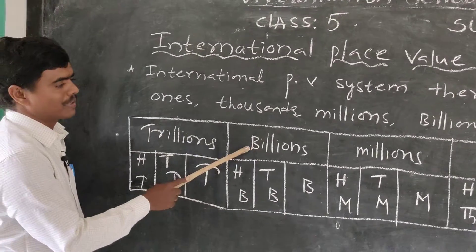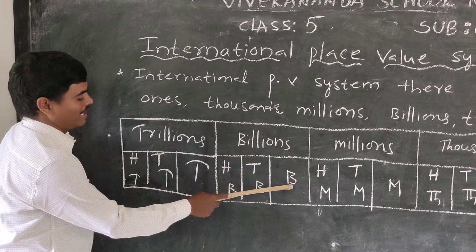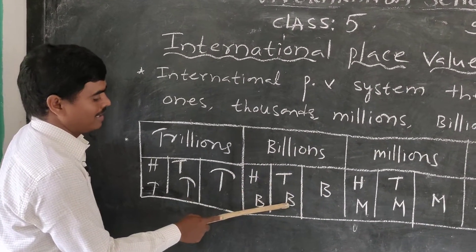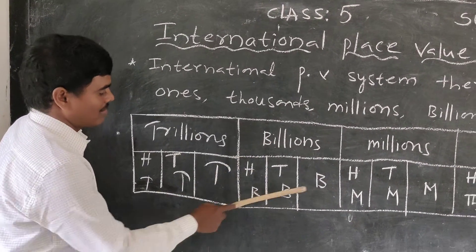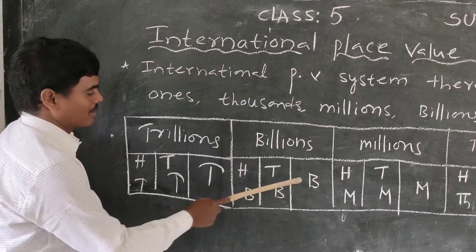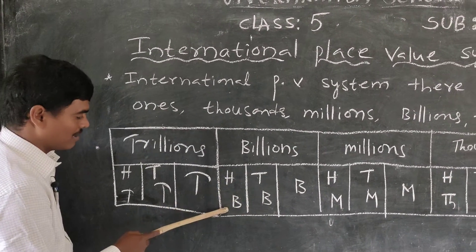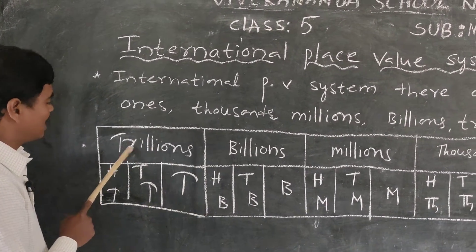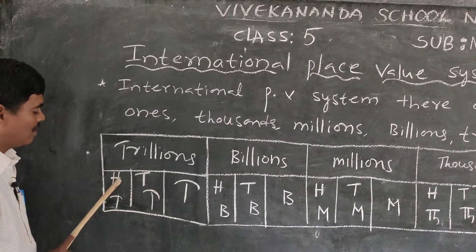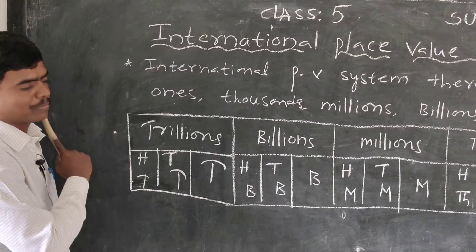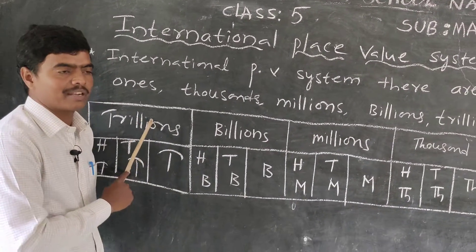The fourth period is the billions period: billions, ten billions, and hundred billions. Next is the trillions period: trillions, ten trillions, and hundred trillions. For the 5th standard, we go up to trillions.